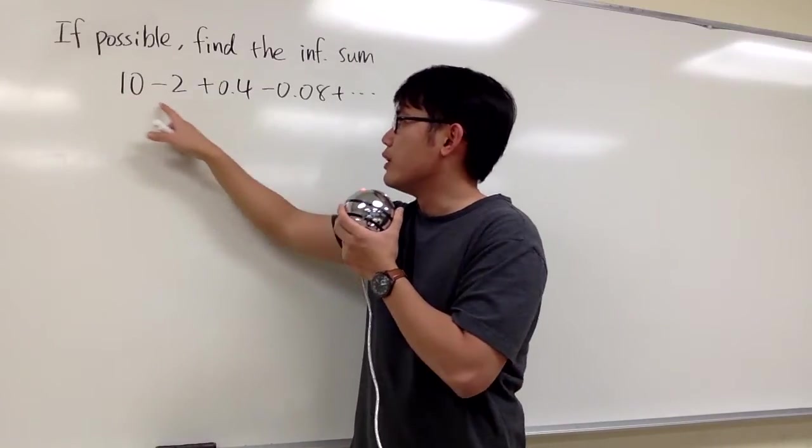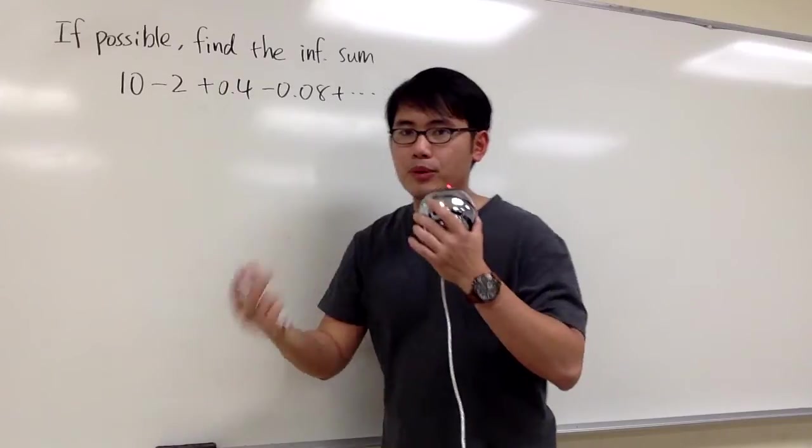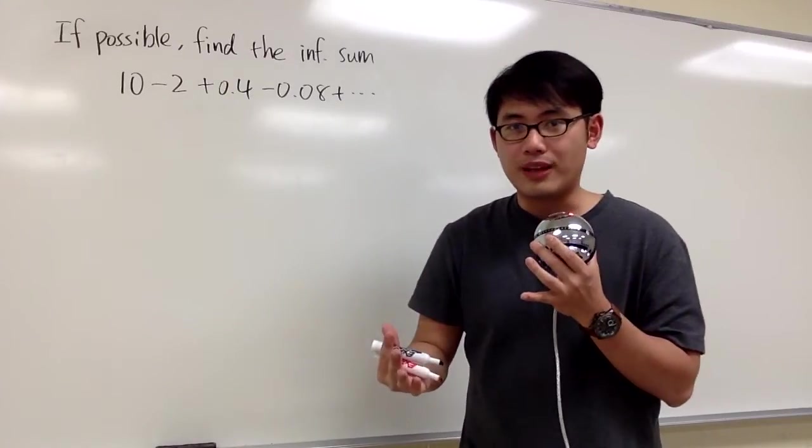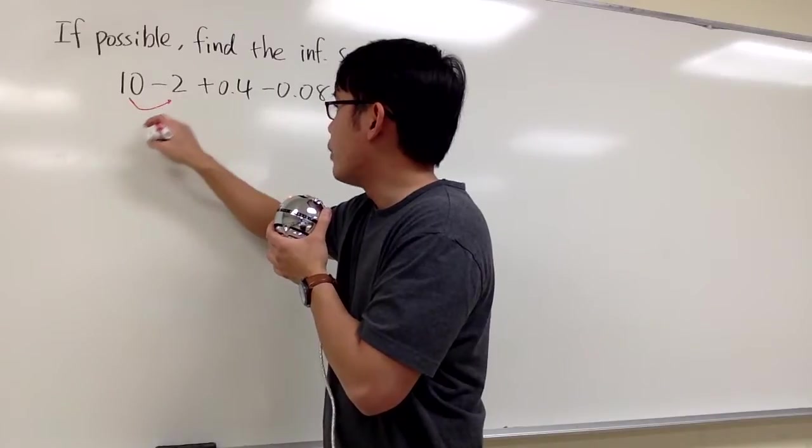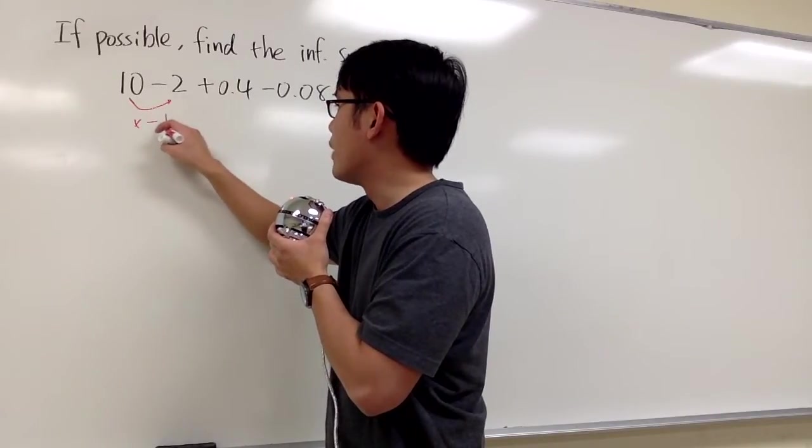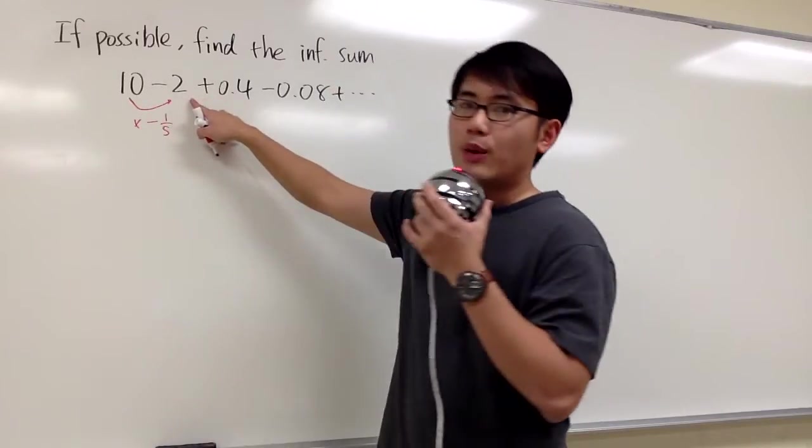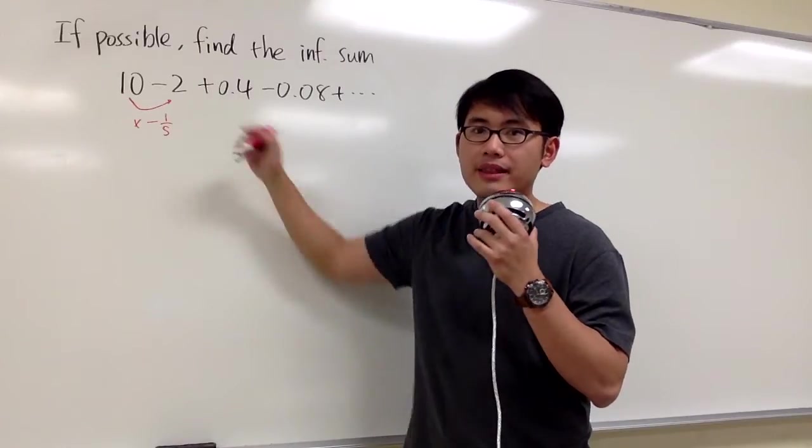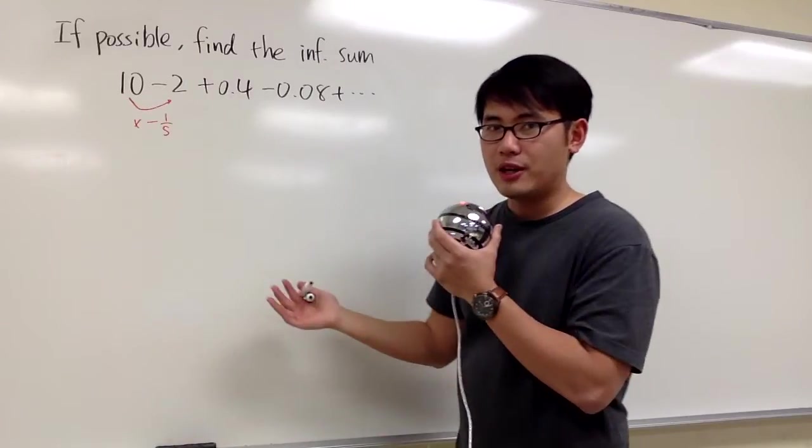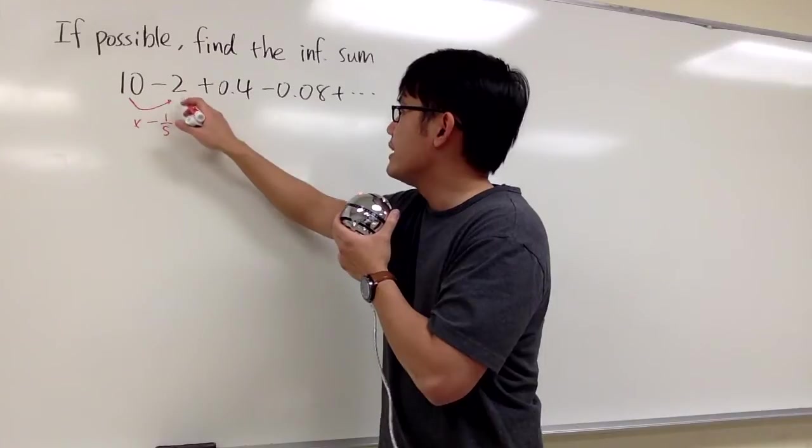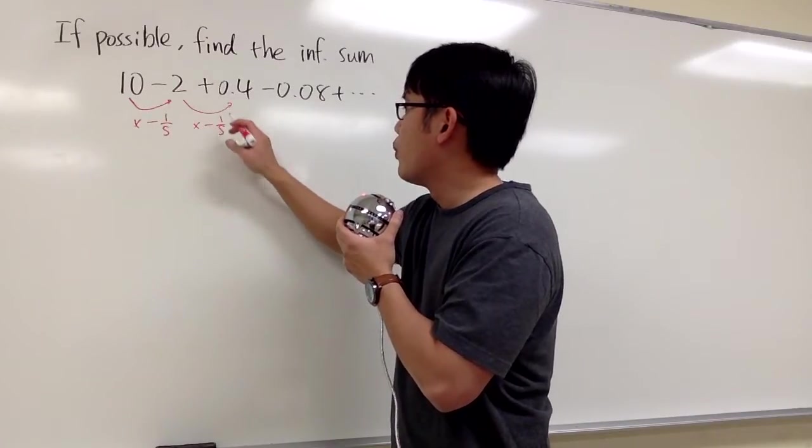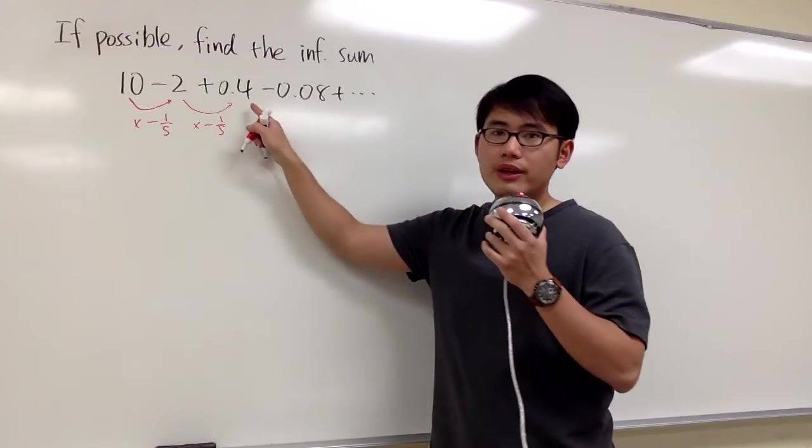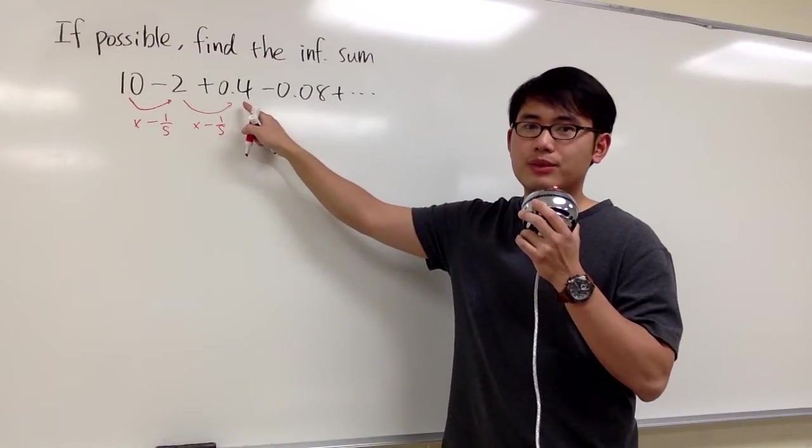How can we get from 10 to negative 2? What kind of operation are we doing? Notice that if you take 10 and multiply by negative 1 over 5, we end up with negative 2. Does that work for the next term? If you take negative 2 and multiply by negative 1 over 5, you also end up with positive 0.4.